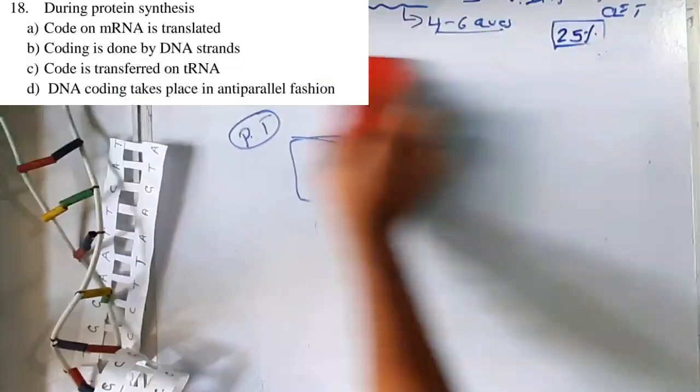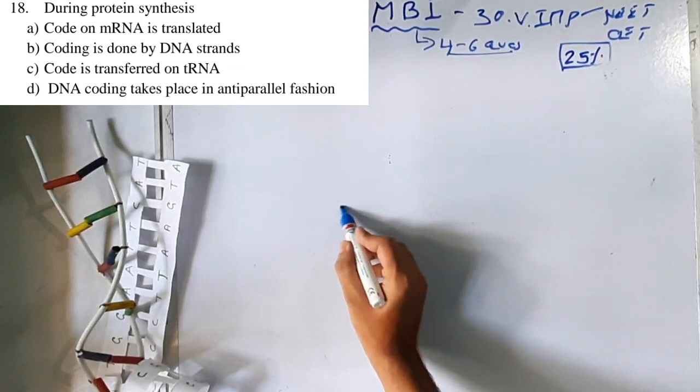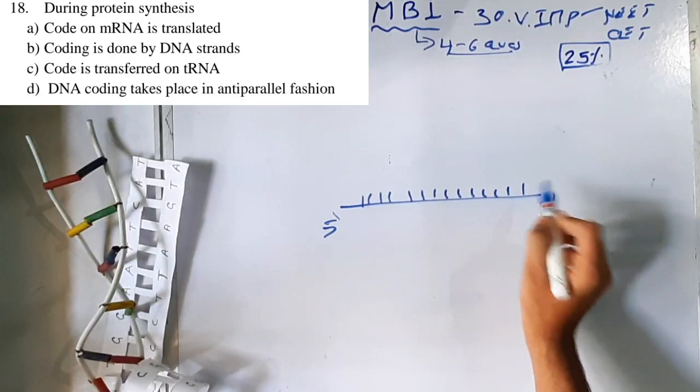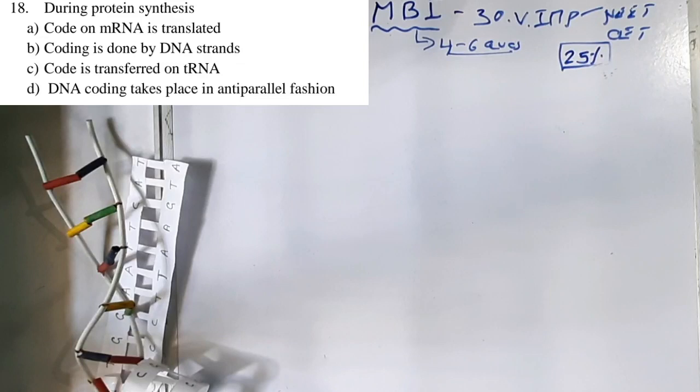Question 18: Which is correct about coding? Codon mRNA is translated — yes, mRNA codons (sets of 3 nitrogenous bases) are translated at the ribosome to produce proteins. Option A is correct.